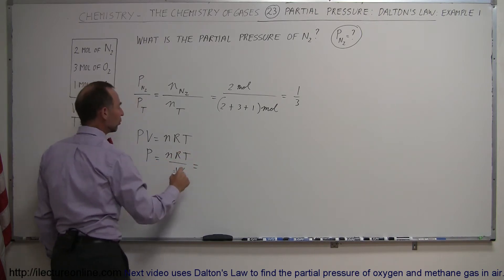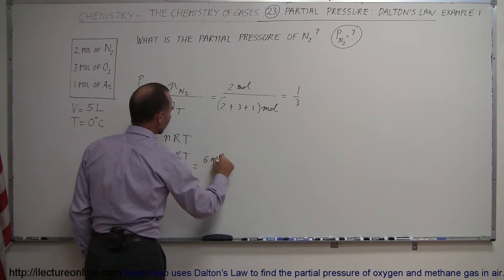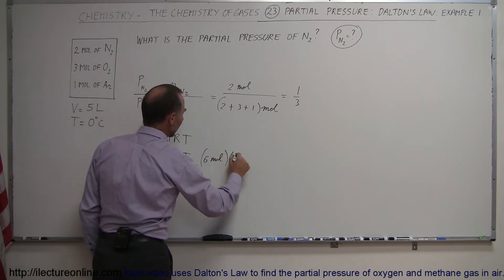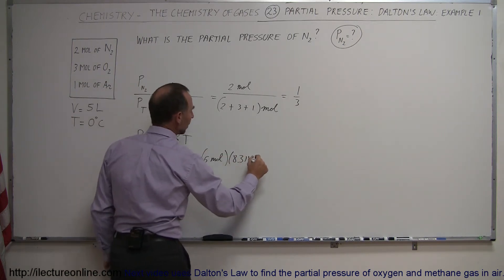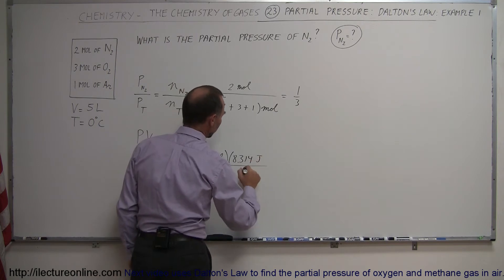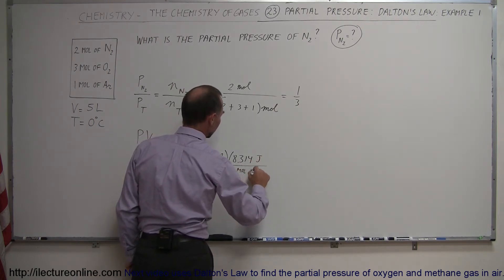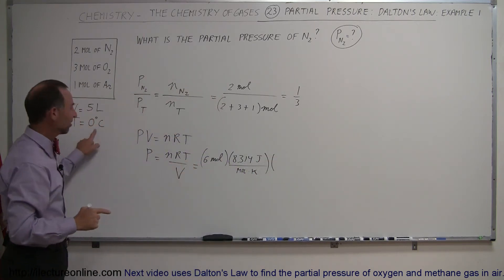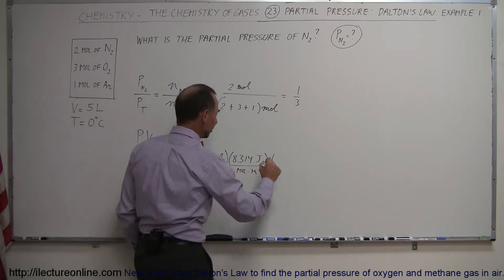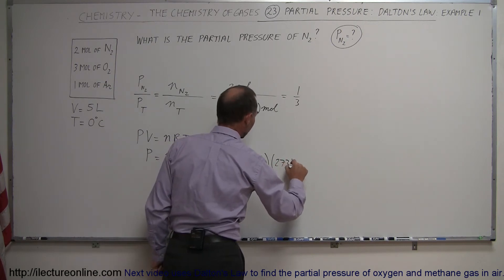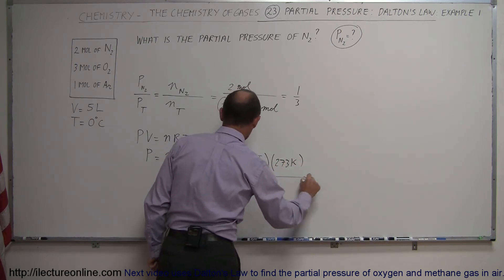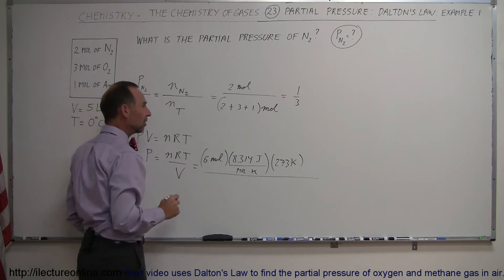The total number of moles is 6 moles. R is 8.314 joules per mole times kelvin. Multiply times the temperature, 0 degrees centigrade is 273 kelvin. So that's 273 kelvin. And then divide the whole thing by the volume, which is 5 liters.